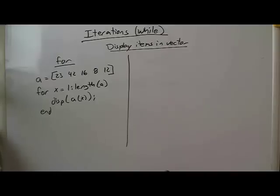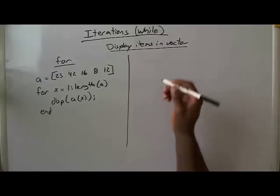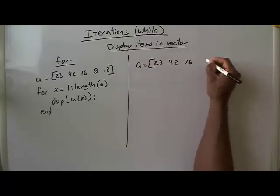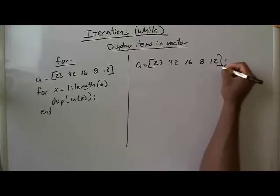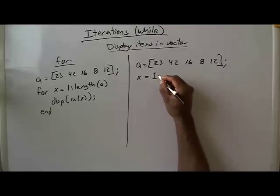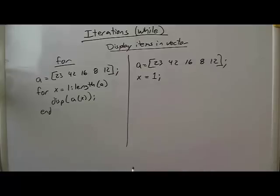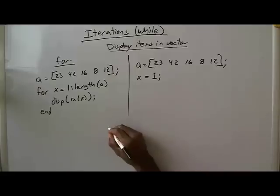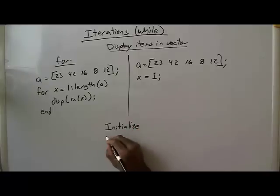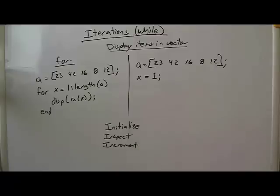Contrastingly, we're going to do it with the while loop, and I'm going to point out the changes. We do A equals 23, 42, 16, 8, and 12. Now, this is where it changes. Remember our three things: we have to initialize, we have to inspect, and we have to increment. Initialize, inspect, and increment — that's what we have to do on the while loop side.